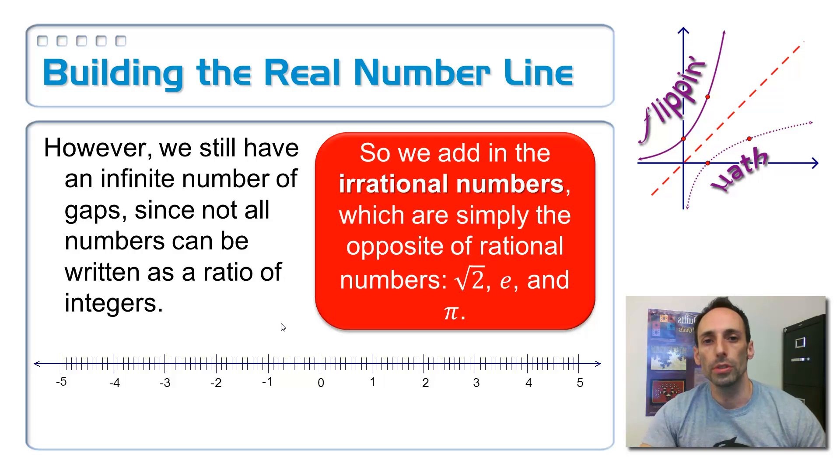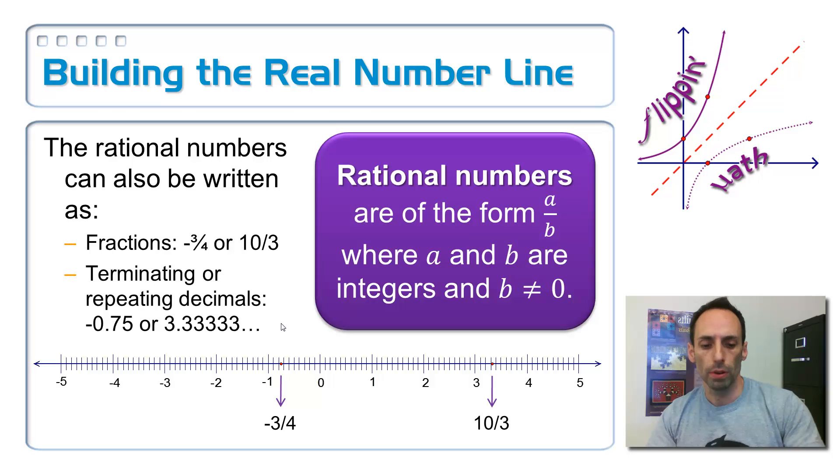What we said about rational numbers is that they have to be able to be written as a fraction, integer divided by another integer. We also said that the bottom number can't be 0 just because we can't divide by 0.